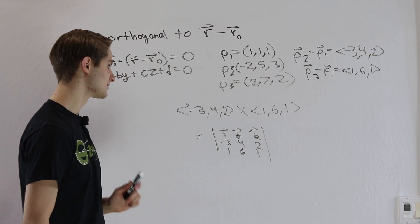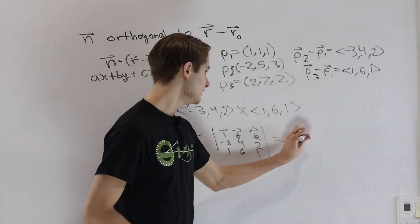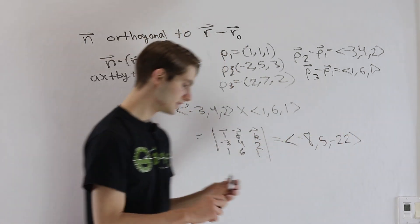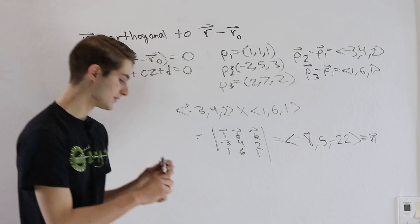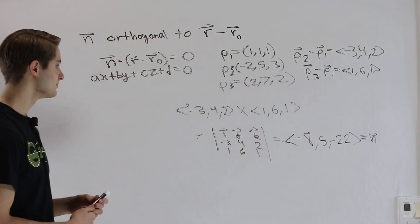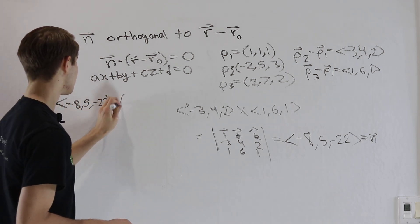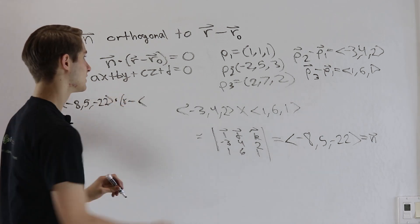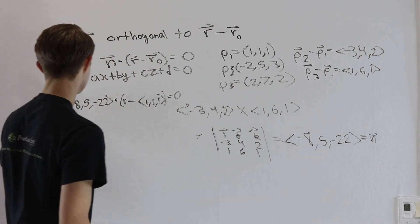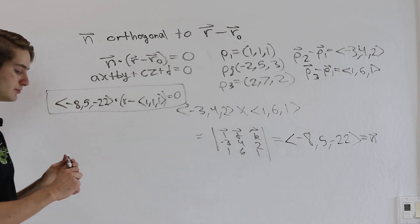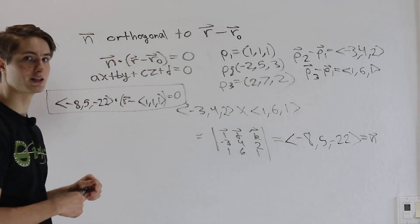The result of this cross product is (−8, 5, −22), which we define as our normal vector. For the equation of the plane in vector form, we write: (−8, 5, −22) dotted with (r minus r-naught) equals zero, and we can simply pick p1 = (1, 1, 1) as our point. That gives us the equation of the plane. We could also expand the dot product and solve in terms of x, y, and z to get the coordinate form.